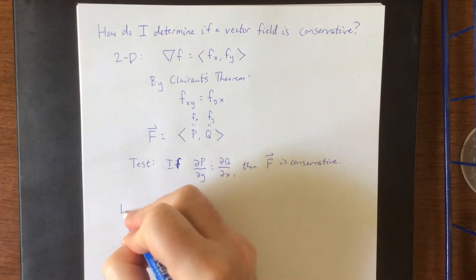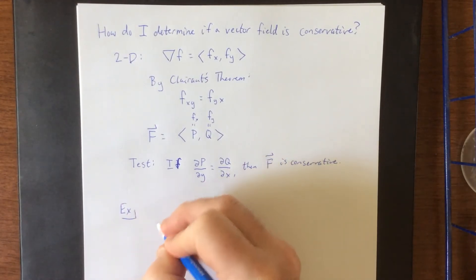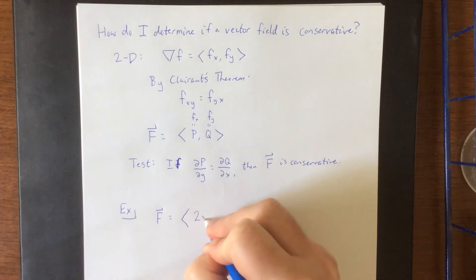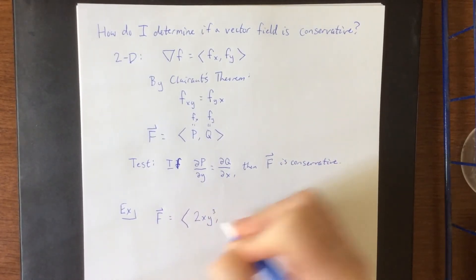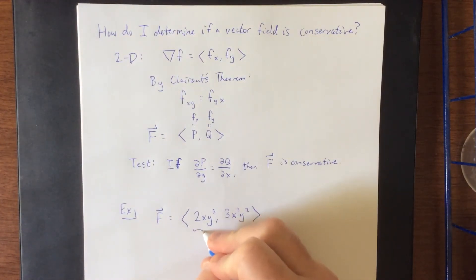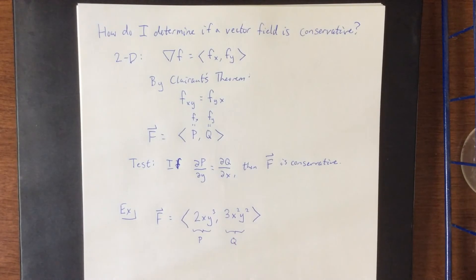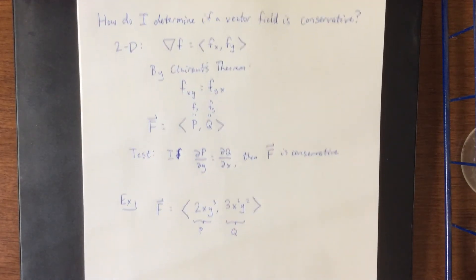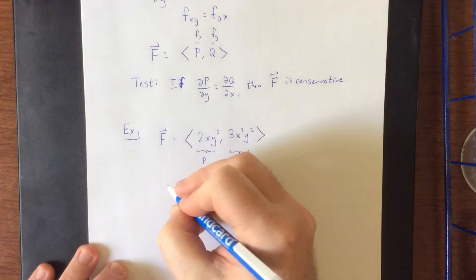A quick example of a conservative vector field would look something like this. So suppose that we have capital F is equal to 2xy cubed and 3x squared y squared. So we're going to know this component function as p and we will know this component function as q. And we'll go ahead and do that test for conservativeness that we're looking for.